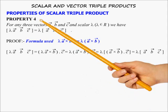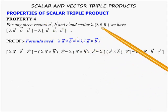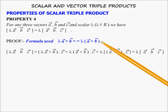Property 4: Scalar multiplication property states that [λA, B, C] = λ[A, B, C], where λ belongs to the set of real numbers. This can be proved using the scalar multiplication properties of dot product and cross product.